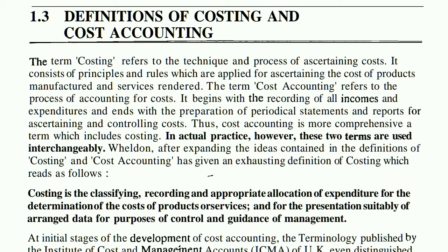After making the product, accounting means recording the price — the fixed costs, the variable costs, the manufacturing costs — and then we do accounting. That is called cost accounting. The term cost accounting refers to the process of accounting for cost.